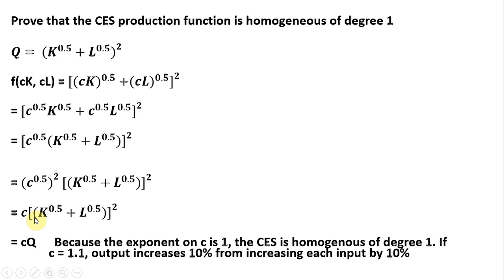And if we want, what's in brackets is just the production function, which is Q, and I'll just substitute that in for what's in brackets. So again, because the exponent on C is 1, the CES is homogeneous of degree 1.